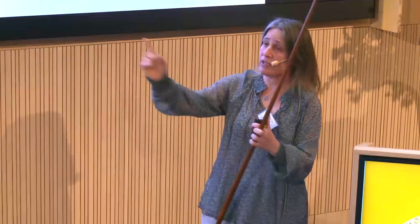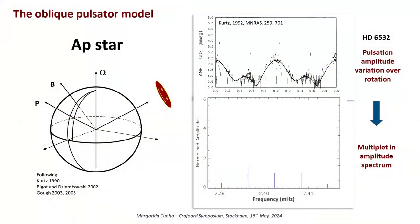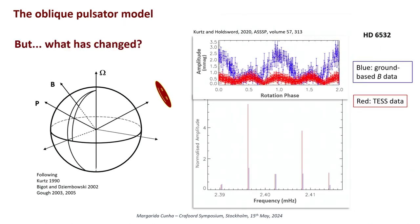If you take the Fourier transform of these pulsations, because of this amplitude modulation, rather than having a single peak for a single mode, you have a multiplet — this is just the impact of having the modulation on the amplitude. People can in principle use this to infer information about the geometry of the mode: is it a dipole mode, a quadrupole mode, a radial mode? And also about the obliquity of the pulsation axis or the magnetic axis, if we think they are aligned. The problem is we now have the same thing in TESS data, and the modulation is completely different from the ground-based data — the relative sizes of peaks in the multiplet are completely different, so the inferences we make will differ.